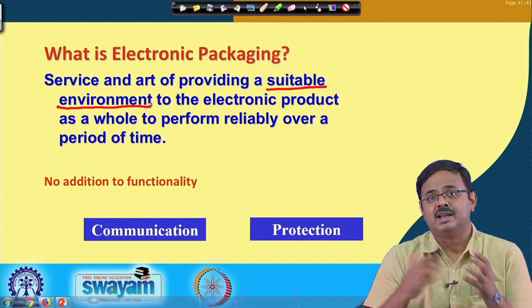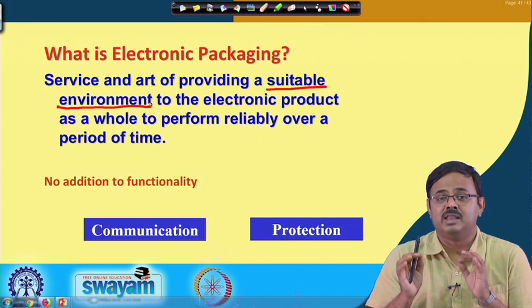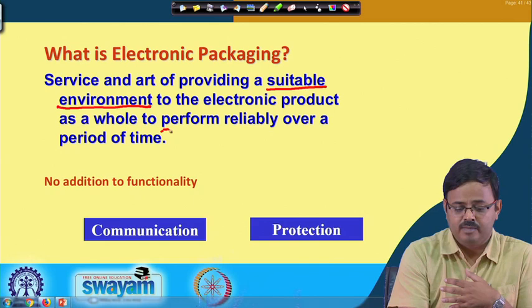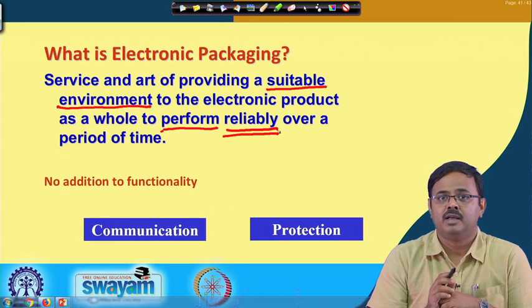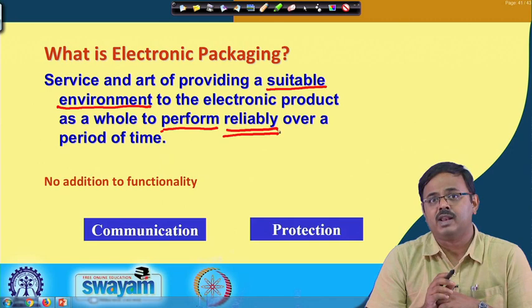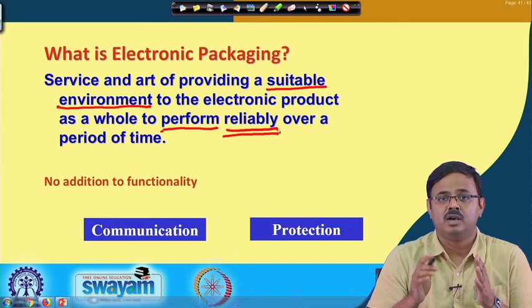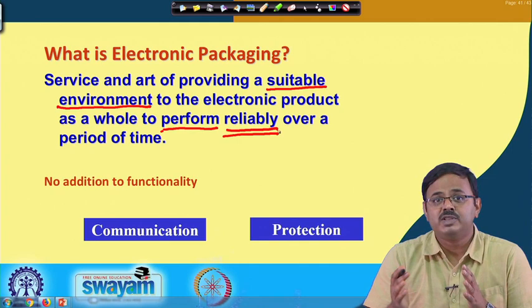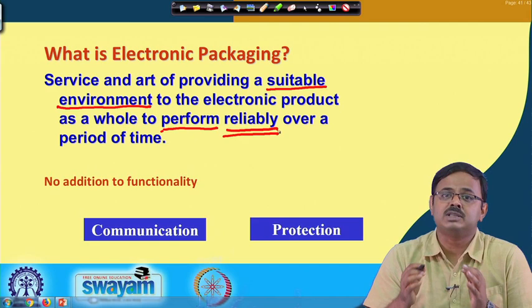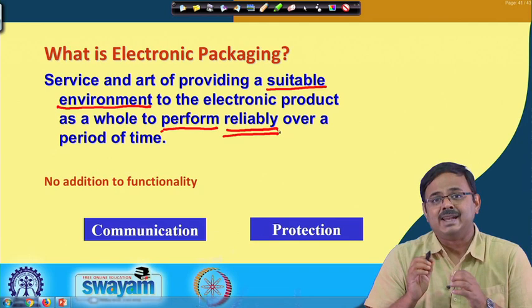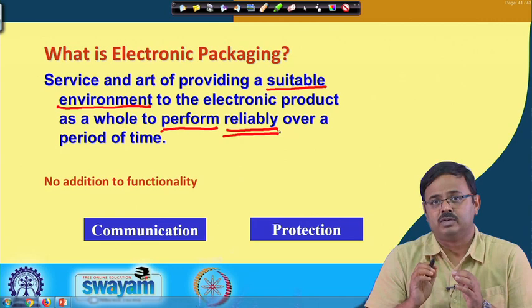They are able to exchange signals and the integrity of those signals is maintained - signal integrity. The power is delivered at the right place at the right point of time from the power generating device. And performing reliably is very, very important. It is not enough for your smartphone or laptop to perform well today when you start using it. It should perform with the same effectiveness, efficiency, and reliability 3 years from now. The performance should not degrade with time, or degrades as minimally as possible. That is the reliable performance over its lifespan, and if it is not packaged properly, we are not going to ensure that.